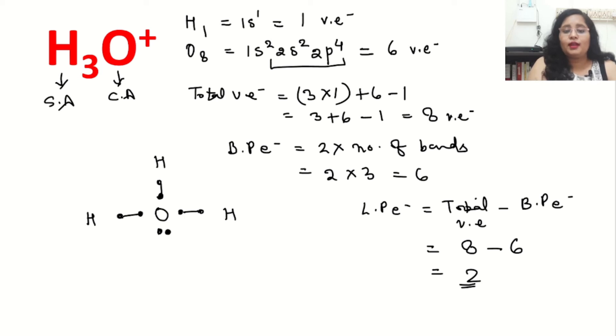But one more thing we are missing: we are having a positive charge over here. The next tip which is very important to remember always: the positive charge will be acquired by the central atom always, and the negative charge will always be acquired by the surrounding atom. So put the plus charge on the central atom oxygen, and our Lewis dot structure of H3O plus is completed. Very easy to form with a little bit of calculation.